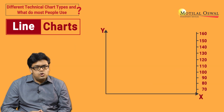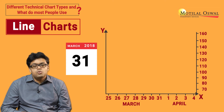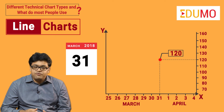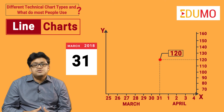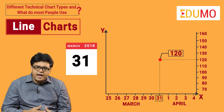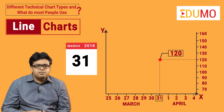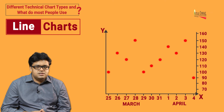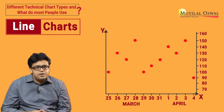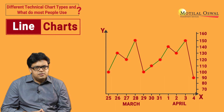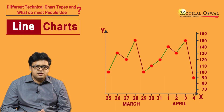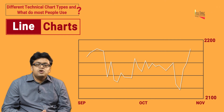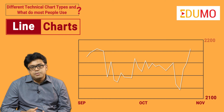For example, suppose the closing price of a stock on 31st March 2018 was rupees 120. To plot this on a chart, you put a dot right above the date marking on the x-axis and alongside the rupees 120 mark on the y-axis. You do this for all other dates, then connect all the dots with a line — that's your line chart.